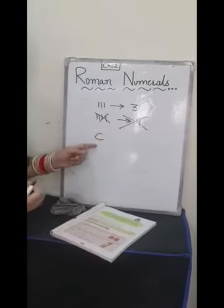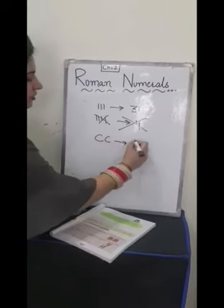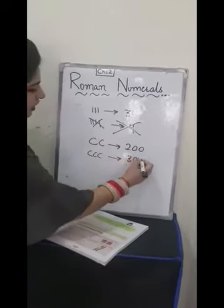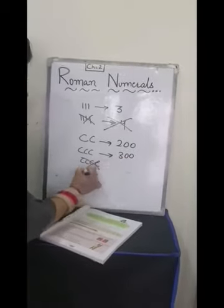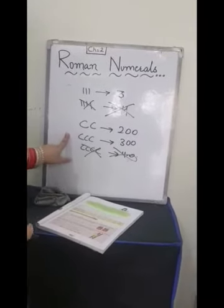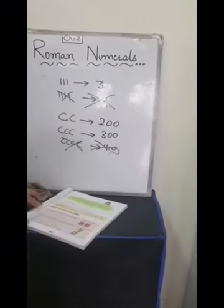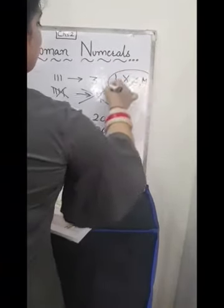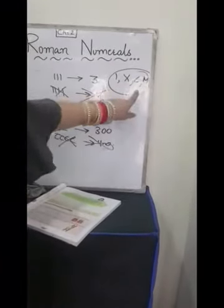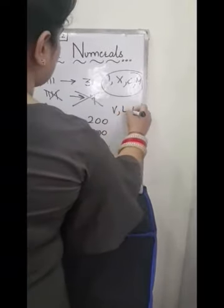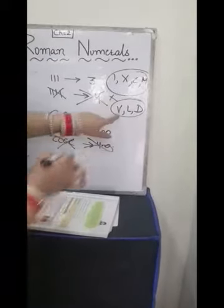So C means 100. CC means 200. And CCC means 300. But CCCC doesn't mean 400, because you can't repeat any symbol more than 3 times. So you can only repeat I, X, C and M. You can only repeat these symbols, but you can never repeat V, L and D.